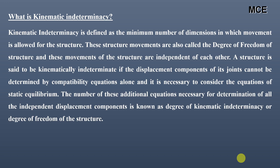Before learning how to find the kinematic indeterminacy of a truss, let's first learn what kinematic indeterminacy actually is. Kinematic indeterminacy is defined as the minimum number of dimensions in which movement is allowed for the structure. These structural movements are also called degrees of freedom and are independent of each other. A structure is kinematically indeterminate if the displacement components of its joints cannot be determined by compatibility equations alone, and you need the equations of static equilibrium to find these unknown displacements.